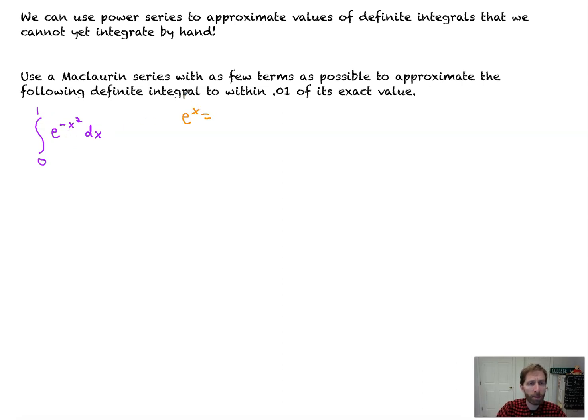Well, you take e to the x. You start with that Maclaurin series. And that's 1 plus x plus x squared over 2 factorial plus x cubed over 3 factorial plus dot dot dot. And it keeps on going. x to the n over n factorial plus dot dot dot. Now, from here, what our job is, is to then insert minus x squared into it.